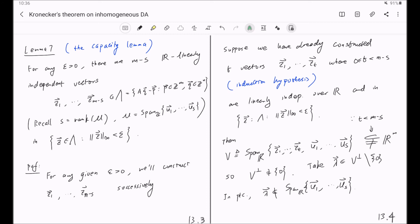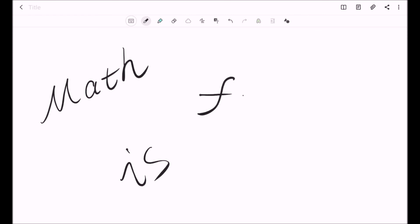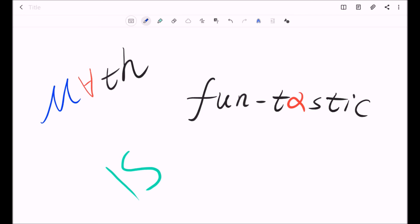And by mathematical induction, we can construct Z1 through ZM minus S successively. And I should emphasize that the hypothesis that T is less than M minus S is important, because it is going to be used to show that V is a proper subset of R^M, so that it could have a non-trivial orthogonal complement. And this finishes the proof of Lemma 7.